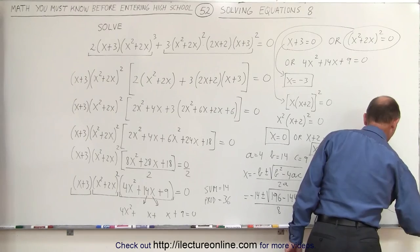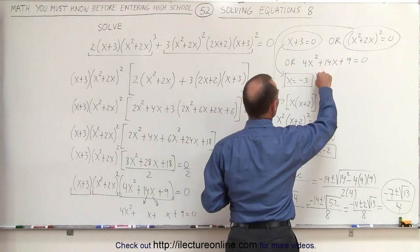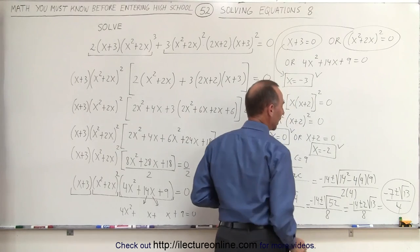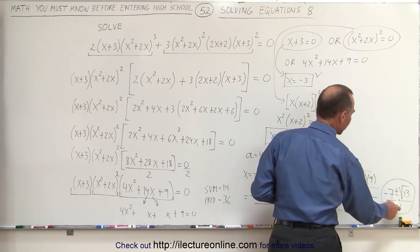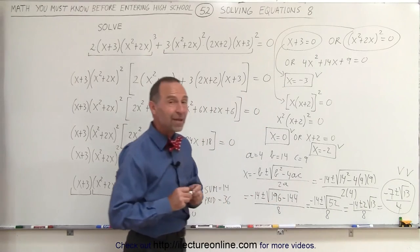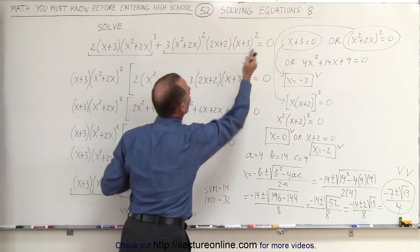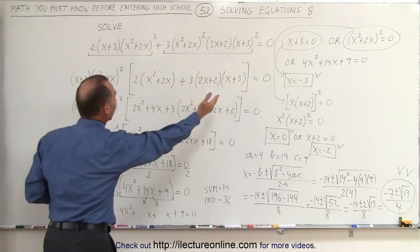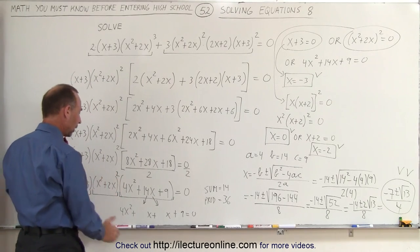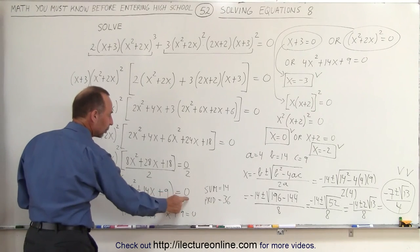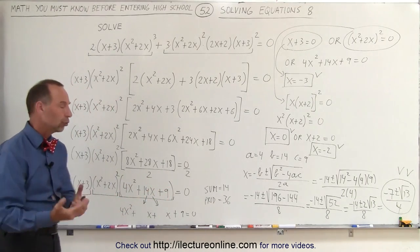That gives us the next two solutions to our original equation. We now have a total of five: x equals negative 3, x equals 0, x equals negative 2, x equals negative 7 plus the square root of 13 over 4, and x equals negative 7 minus the square root of 13 over 4. The original equation has five possible solutions for x that allow the left side to equal the right side. The methodology is: factor everything you can, write it as the product of binomials and trinomials, and when they multiply together to equal 0, set each factor equal to 0 and find the solutions appropriate to that.